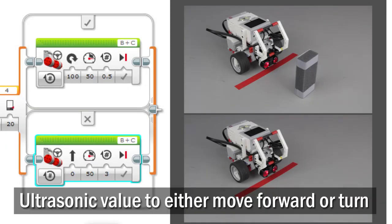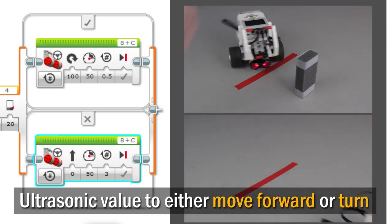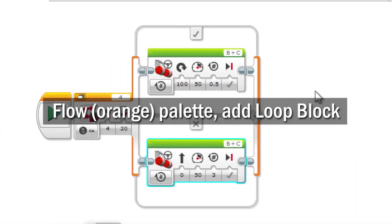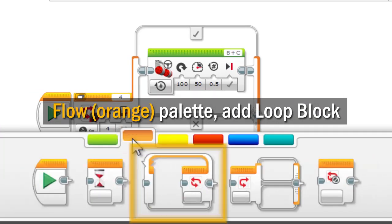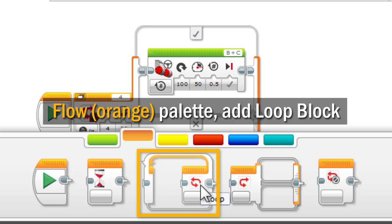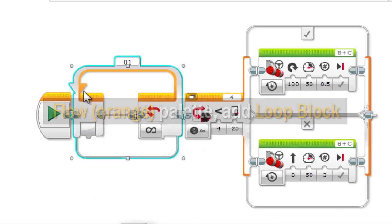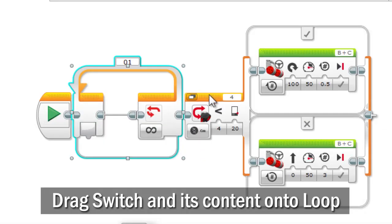The switch uses the ultrasonic sensor value to determine whether to move forward or turn to the side. Return to your program and go to the flow palette and add a loop to the program. Drag the switch and all of its contents into the loop.